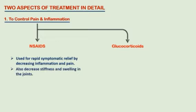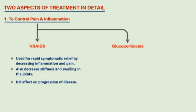Next, we see some drugs used to treat rheumatoid arthritis. The drugs used in the treatment of rheumatoid arthritis are methotrexate, sulfasalazine, leflunomide, and other immunosuppressant agents.